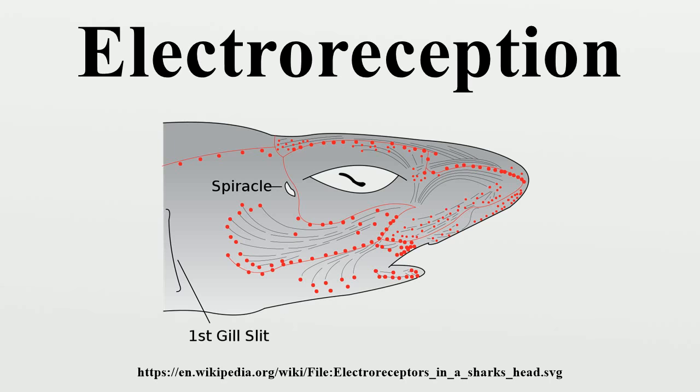Sharks and rays, such as the lemon shark, rely heavily on electrolocation in the final stages of their attacks, as can be demonstrated by the robust feeding response elicited by electric fields similar to those of their prey.